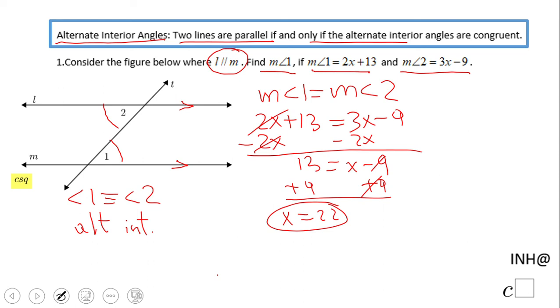You need to find the measure of angle one, so we're gonna plug it in. Two times 22 plus 13 will be 44 plus 13 is 57. The measure of angle one is 57 degrees.